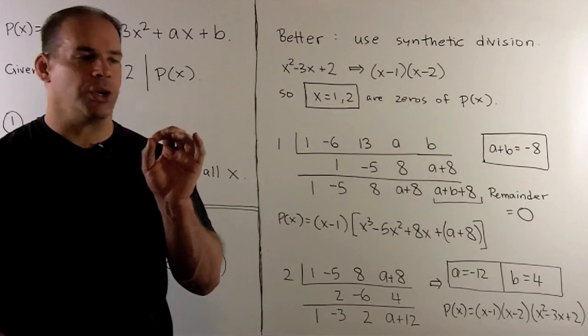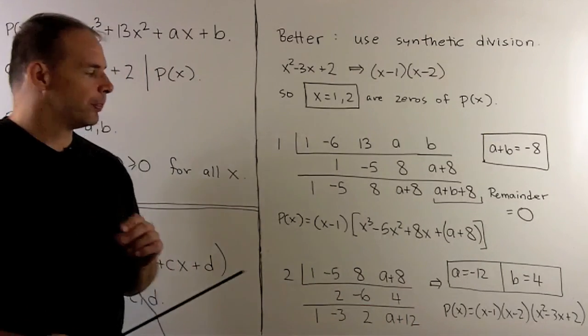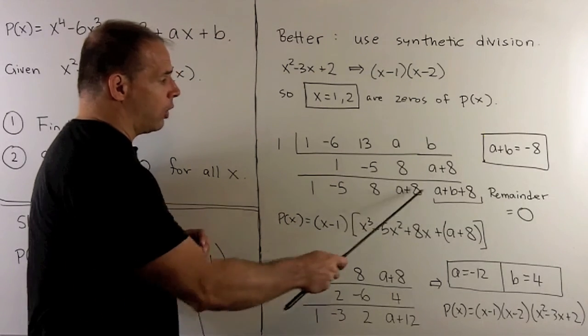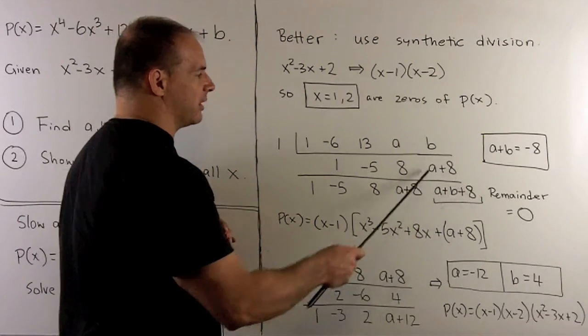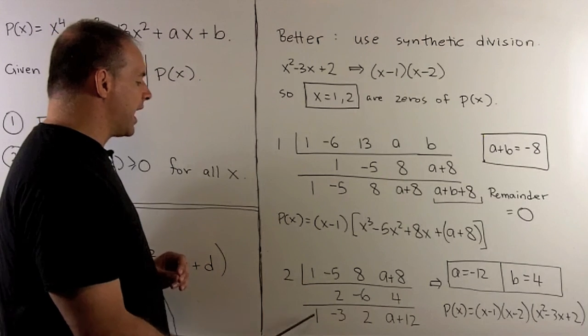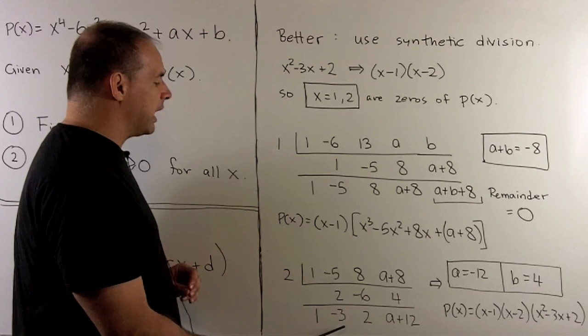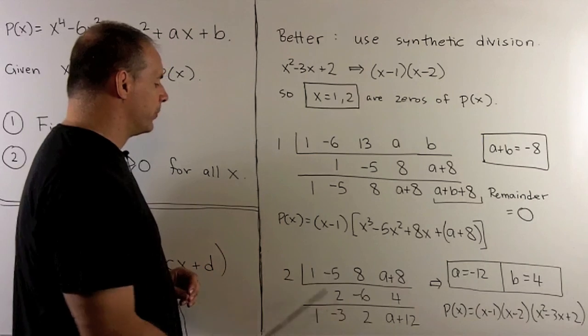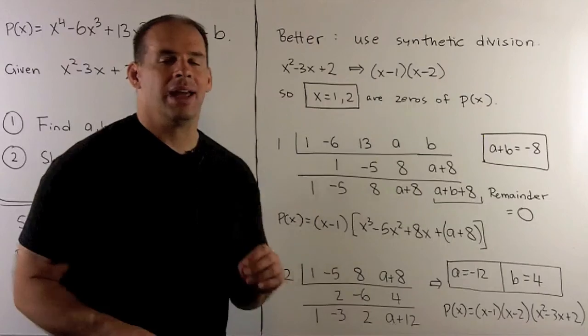That takes care of 1. Now I want to divide X minus 2 into this polynomial here. Same procedure. We'll put a 2 here. The coefficients are just going to be the last row. So I'll have 1 minus 5, 8, A plus 8. And then remember, we're setting this equal to 0. Do our synthetic division. So the 1 comes down. I multiply by 2. 2 goes there. We add down the column. I get a minus 3. 2 times minus 3 gives me minus 6. We add down. I get a 2. 2 times 2 gives me 4. We add down. We get a plus 12.